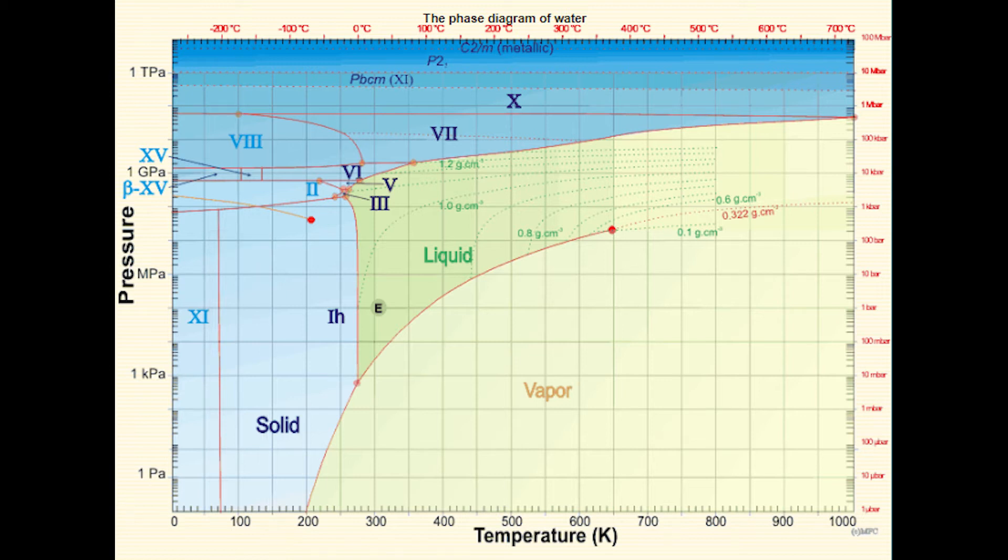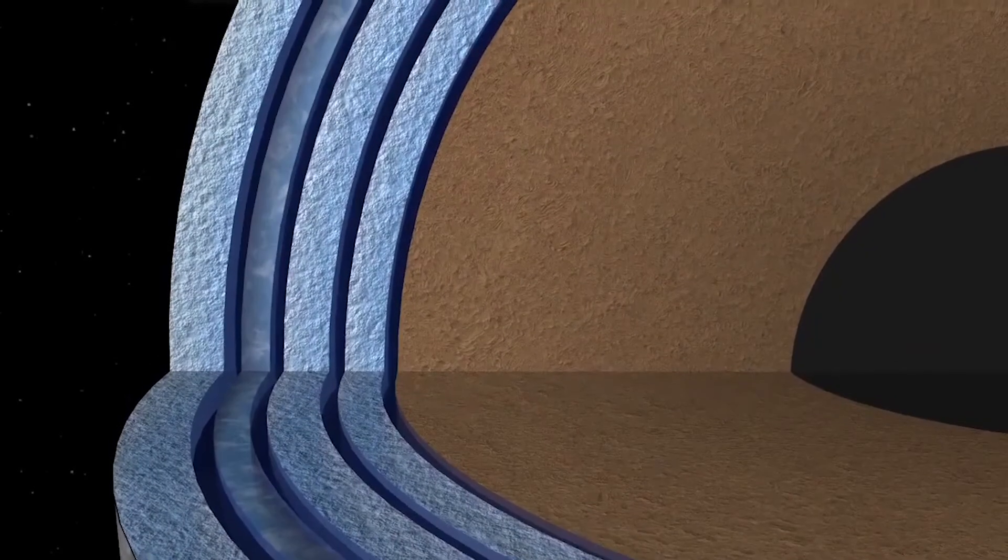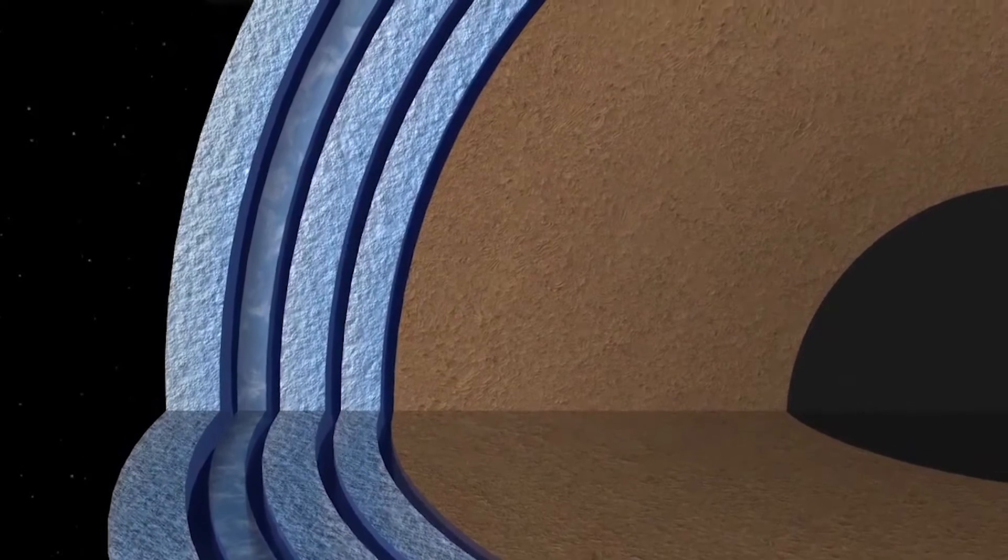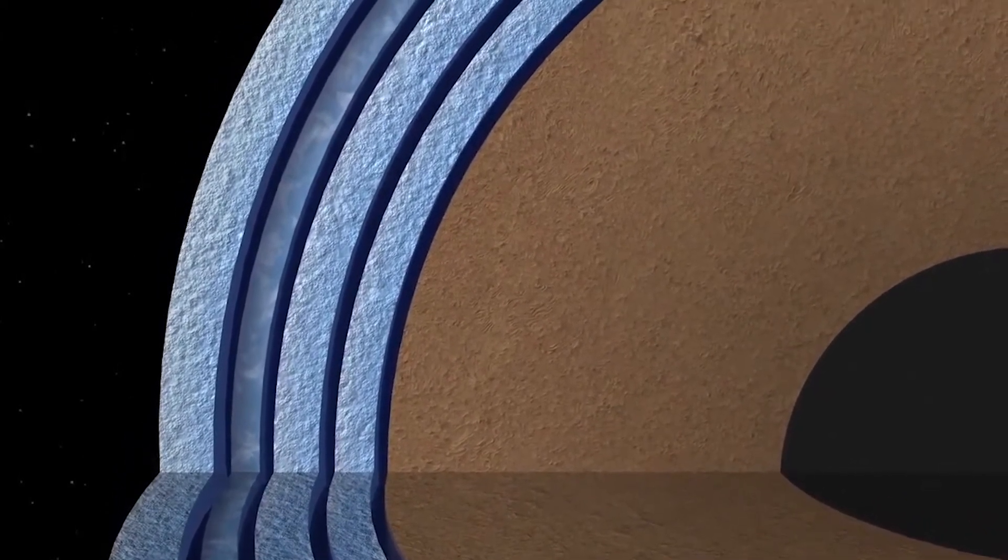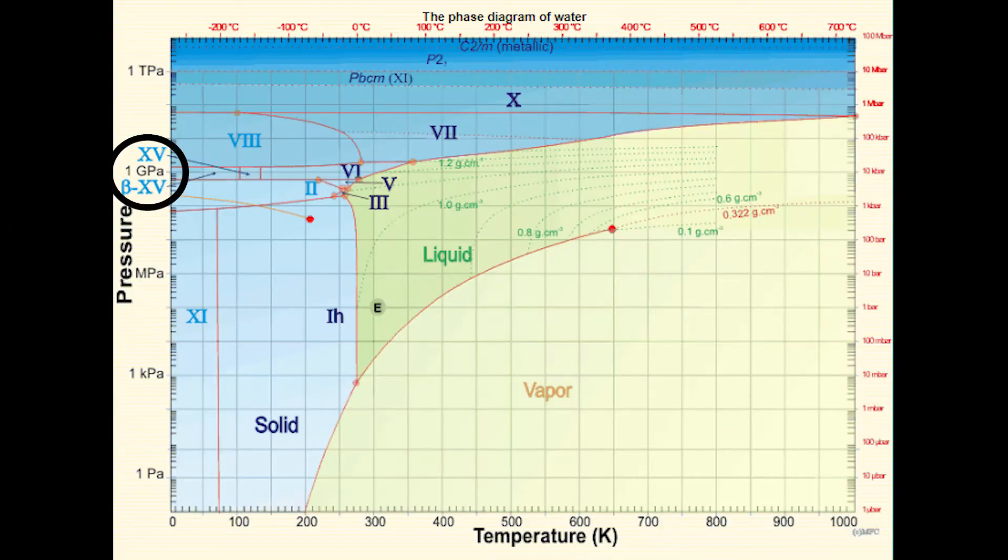Ganymede's large size and high abundance of water relative to the dense mantle materials create very high pressures at the subsurface water and rock interface. The pressure at this depth is around 1.2 gigapascal and the temperature nearly reaches 280 Kelvin, causing the water ice to be in the high pressure phase, ice 6.